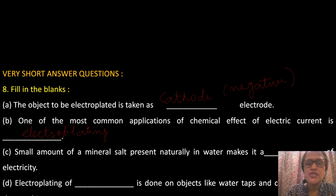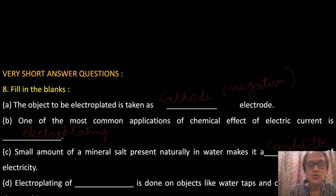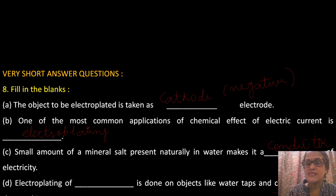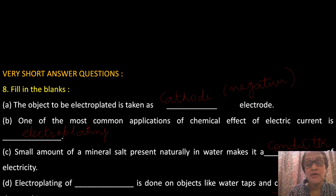Question C — a small amount of mineral salt naturally present in water makes it a conductor of electricity. Question D — electroplating of chromium is done on objects like water taps and cycle bells to give them a shiny appearance.